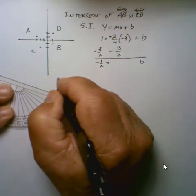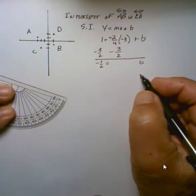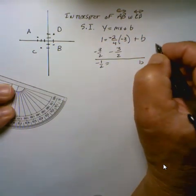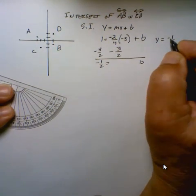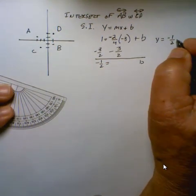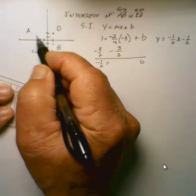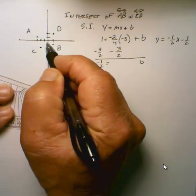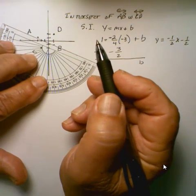So line AB is Y equals negative 1 half, reducing the negative 2 over 4, X minus 1 half. We look and go, okay, that might be right. It looks like the line intersects at about a half.